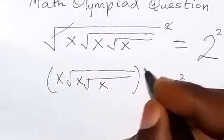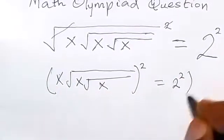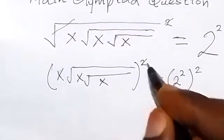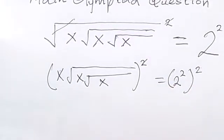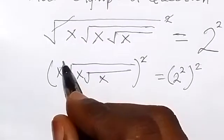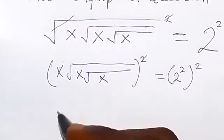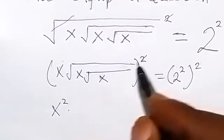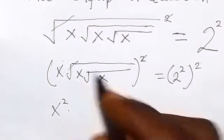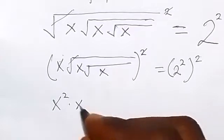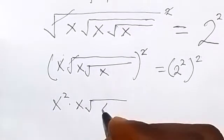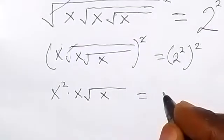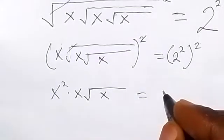When we take the square of both sides again, the square cancels the square root and we are going to have x squared — because we are squaring everything — times x root x, then equals to 2 raised to the power 4.